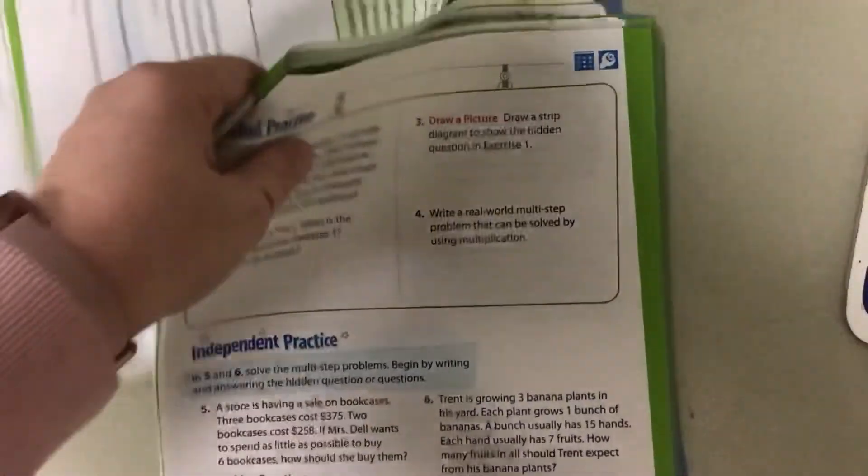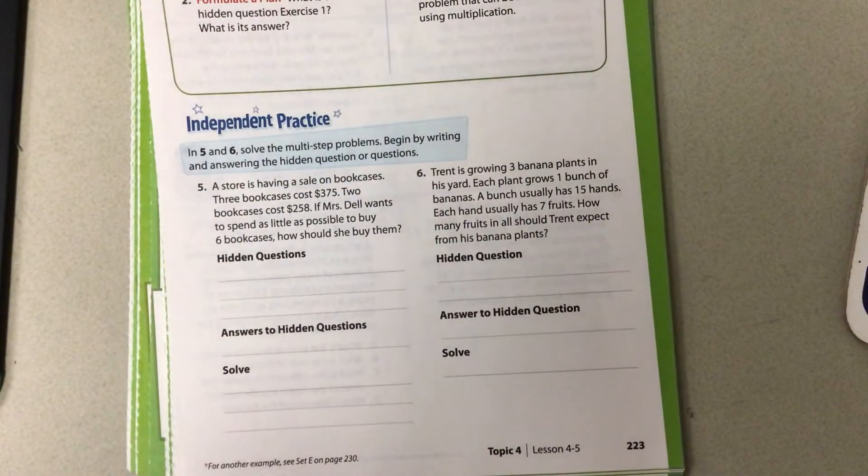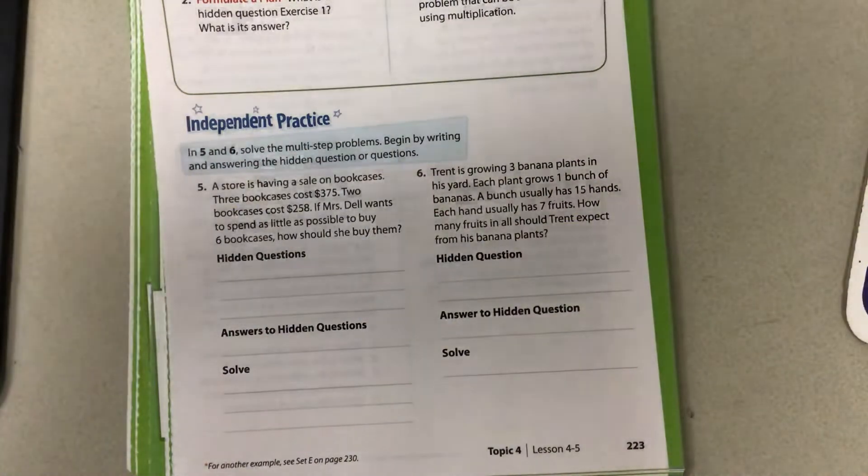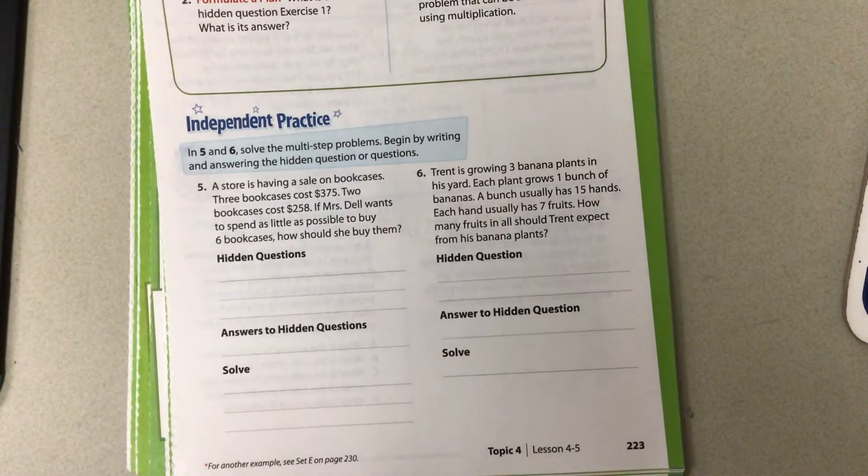All right. Let's try another one. So it says a store is having a sale on bookcases. Three bookcases cost $375. Two bookcases cost $258. If Mrs. Dell wants to spend as little as possible to buy 6 bookcases, how should she buy them?